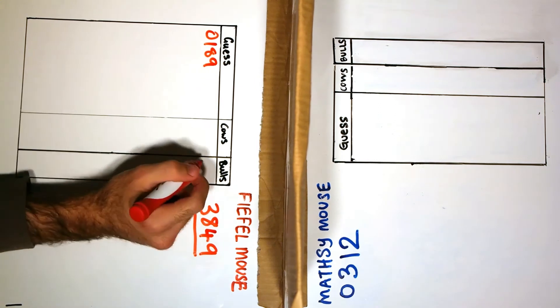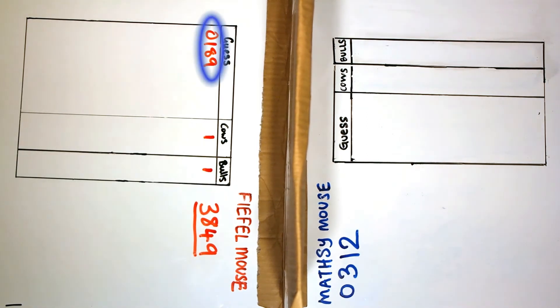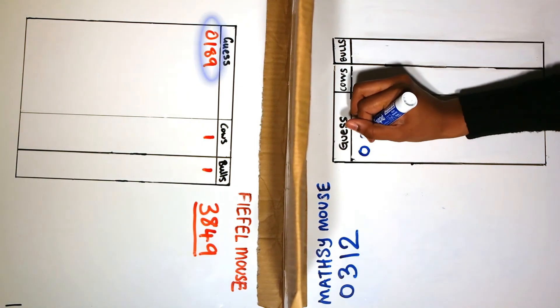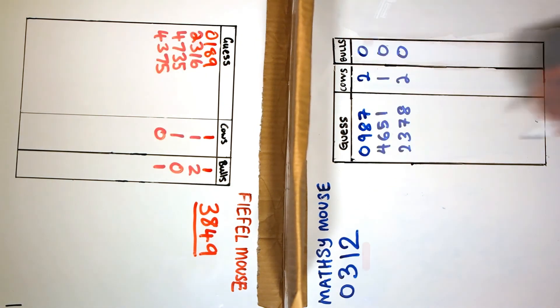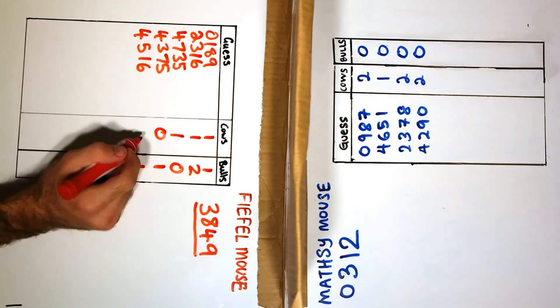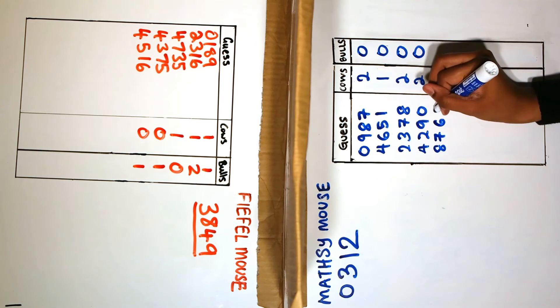Fifle started first and his first guess at my number was 0189. His 0 was a bull and his 1 was a cow. The strategies in this game can look confusing, but it's much easier to understand if you play a few games with a friend.